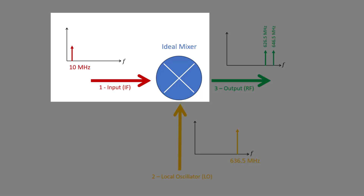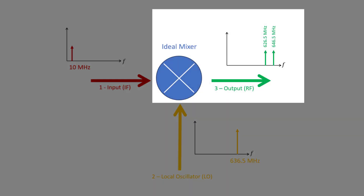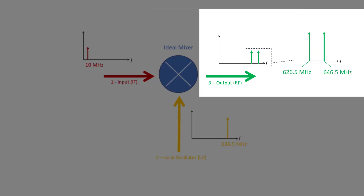At port 1, often called the intermediate frequency port, we will have the 10 MHz signal that we want to upconvert. At port 2, often called the local oscillator port, we will have a fixed signal whose frequency represents the amount by which we want to shift the IF signal — in our case 636.5 MHz. At port 3, the output port, if this was an ideal mixer we would only have two frequency components, which are the sum and difference of the LO and IF frequencies.